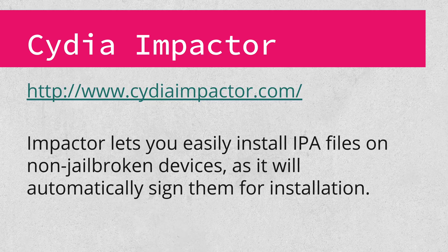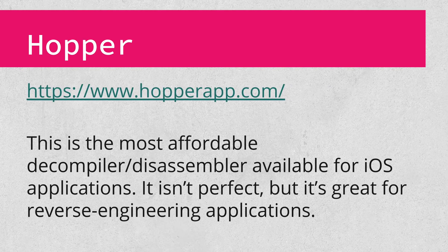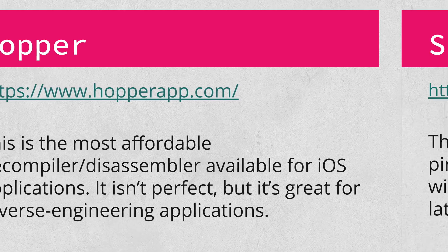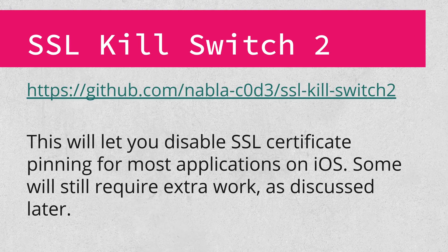Next up is Cydia Impactor. This tool is most useful if you're running a non-jailbroken device, where you can easily and automatically self-sign an IPA and install it on your device. This lets you get around the code-signing restrictions on iOS. If you can't or don't want to jailbreak a device, being able to patch Frida into an IPA and push it to your device is essential for testing. Hopper is a personal favorite — it's not free, but it's an affordable disassembler and decompiler, and it's particularly good at decompiling Objective-C apps. It'll never give you perfect results, but they're near as good as you can get from native code decompilation without spending many thousands of dollars. SSL Kill Switch 2 does one thing and does it well: it disables certificate pinning for any apps using the system standard SSL libraries.